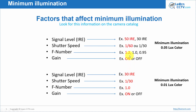What you must do is look for calculators that bring everything to the same value — you need to compare oranges to oranges or apples to apples. If you normalize the second camera to 50 IRE, 1/60 shutter speed, and F-number 1.2, you get the real value — and it will usually be higher than 0.05 lux, sometimes as high as 1 lux. Then you realize the first camera is actually much better.